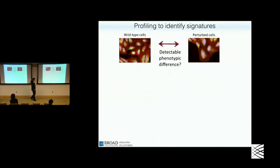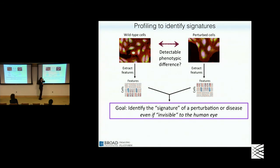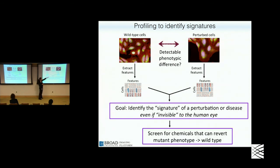Here's an example of this strategy. Say you have two different biological states — wild-type cells and perturbed cells, whether a patient cell line, a genetic alteration associated with a disorder, or overexpressing a miRNA. You run it through the cell painting assay, extract morphological fingerprints, and identify the signature of the perturbed state. It doesn't have to be visible to the human eye — most of the time it's not. Once you find a difference, if the perturbed state represents a disease state, it's simple to screen for compounds that can make the perturbed cells look healthy again.